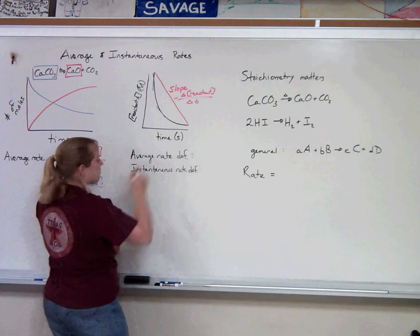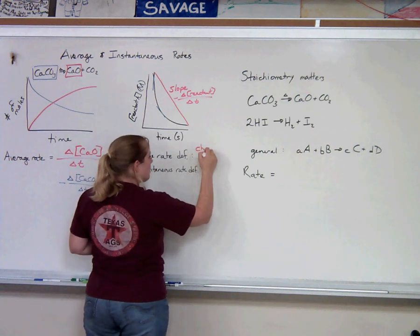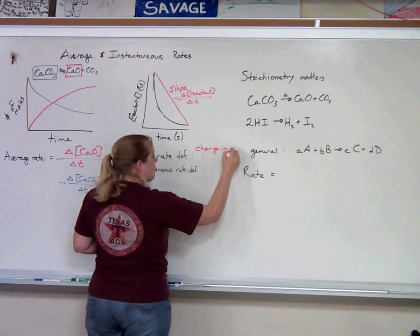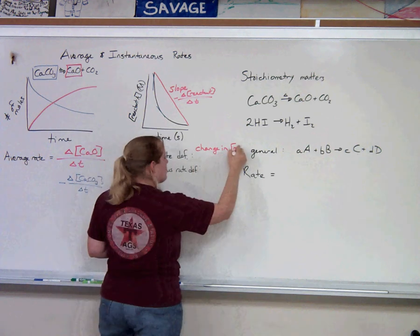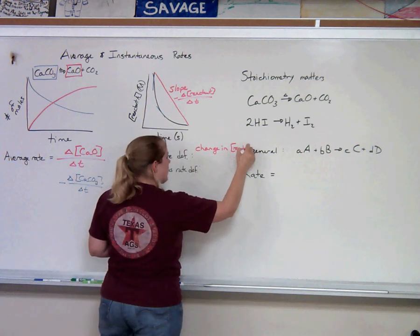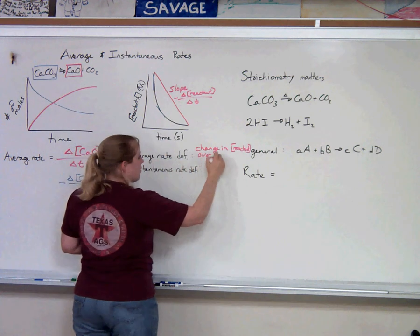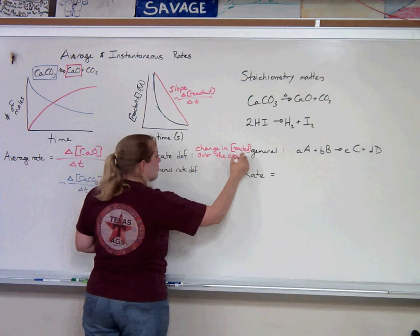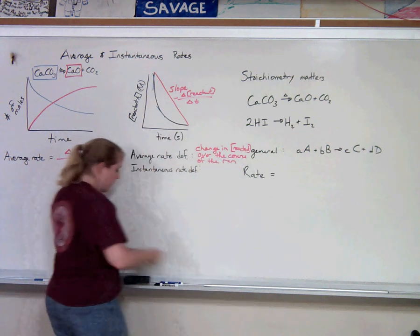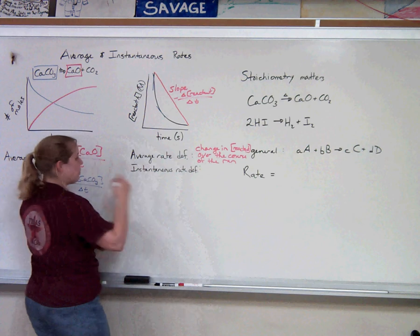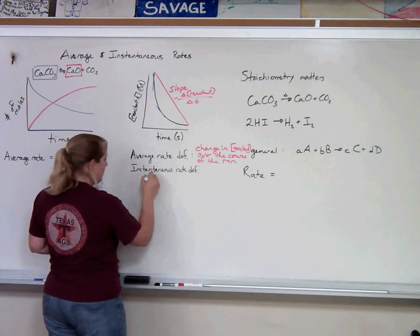The average rate is the change in the concentration of the reactant. Whenever you see something in brackets, it means concentration. So concentration of the reactant over the course of the reaction.